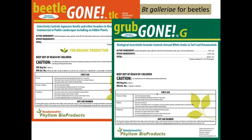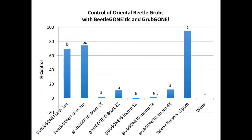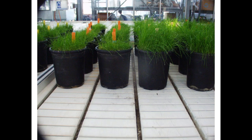We did a trial with oriental beetle using a product called Beetle Gone and a granular version called Grub Gone as an off-label use. We drenched pots and tried the granular too. The drench at two different rates of Beetle Gone was pretty to very effective in controlling oriental beetle; the granulars were much less so. It's nice to see we have a Bacillus thuringiensis alternative for controlling oriental beetle for those wanting an organic product. On the right is an effective treatment compared to the left where plants are much more stunted.